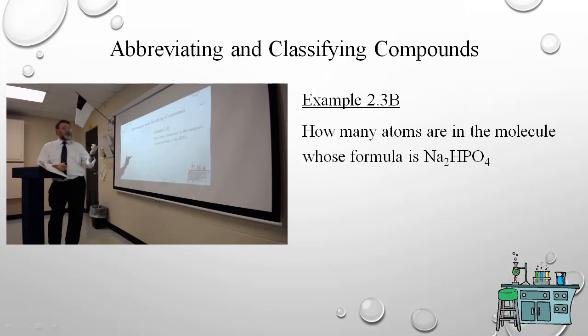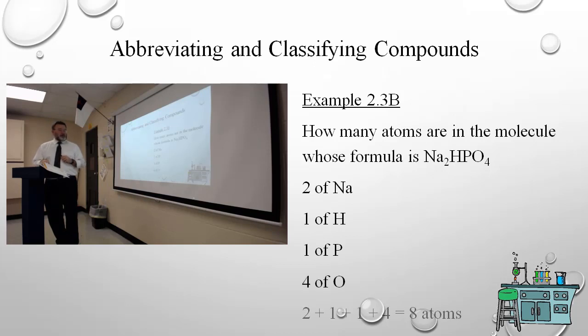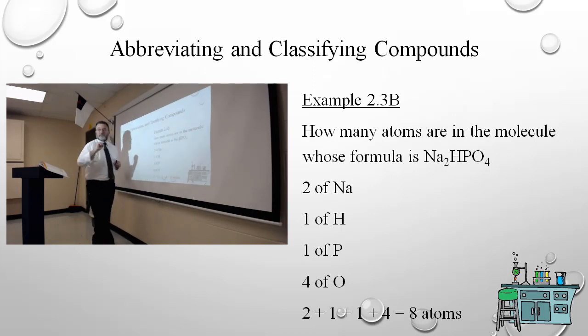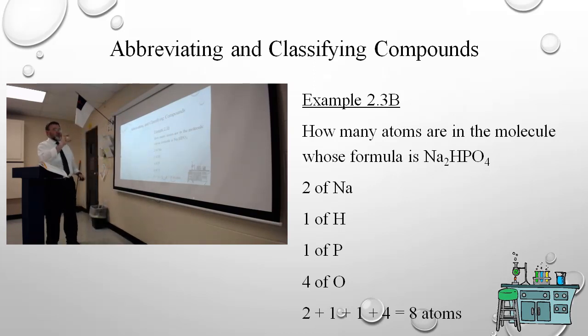Example 3B: how many atoms are in the molecule whose formula is Na2HPO4? Just in your own mind, count up how many atoms it takes. You don't need to worry about the periodic table. How many building blocks are you going to be using to build this molecule? Hopefully you see that you have two sodiums, one hydrogen, one phosphorus, and four oxygens for a total of eight atoms. I have two, three, four, five, six, seven, eight. They're broken down as two sodiums, one hydrogen, one phosphorus, and four oxygens. I know that's phosphorus because potassium is K.